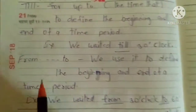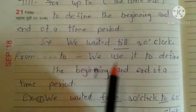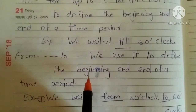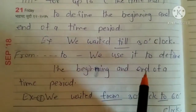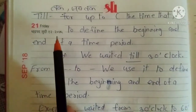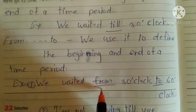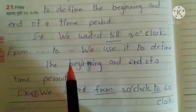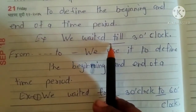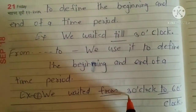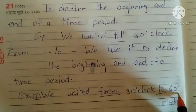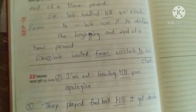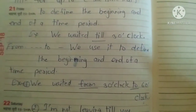Now look at another preposition of time: 'from...to'. We use it to define the beginning and end of a time period. Now we will do some sentences based on this.